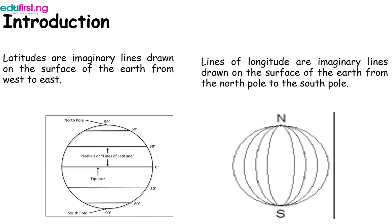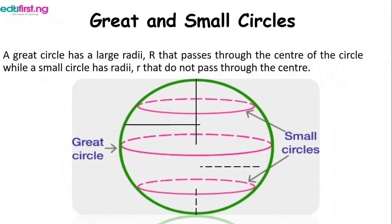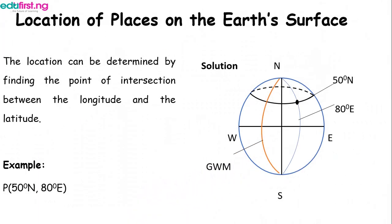Before we make further progress, let's look at great and small circles. A great circle has a large radius — capital letter R — that passes through the center of the circle, while a small circle has radius — small letter r — that does not pass through the center. When you look at the diagram here, we have one great circle and two small circles.